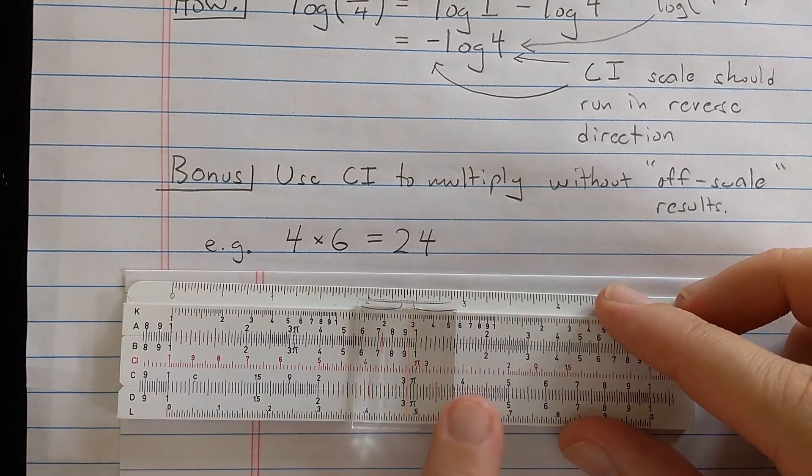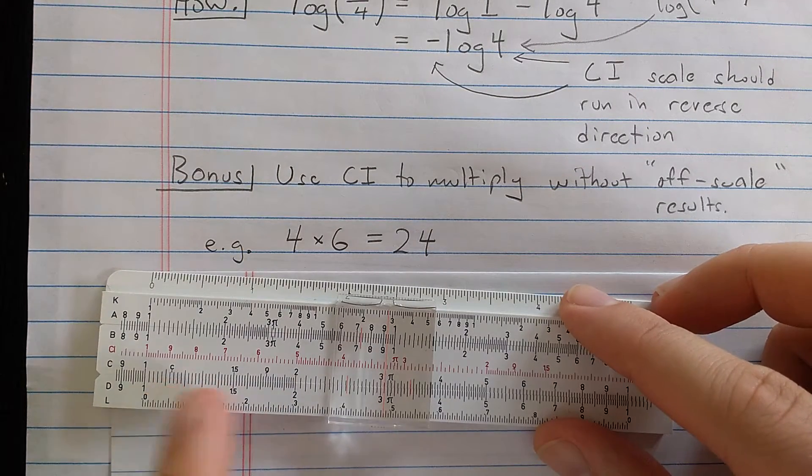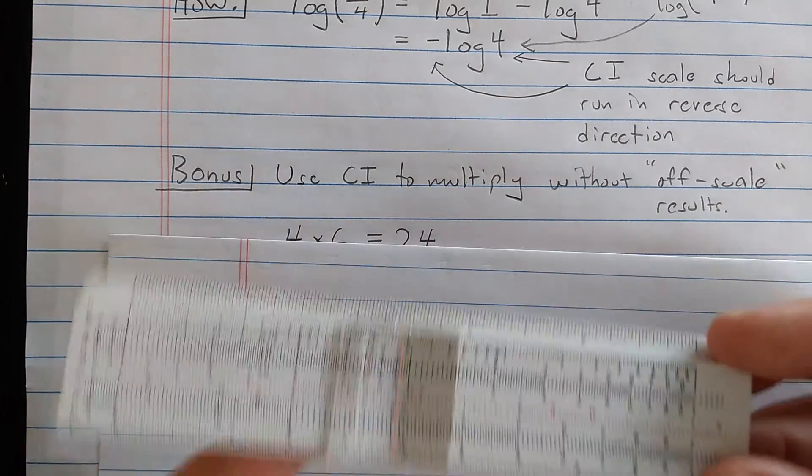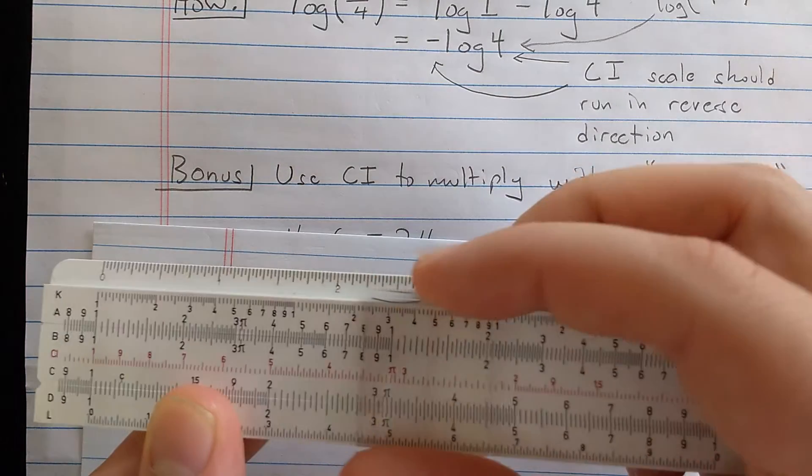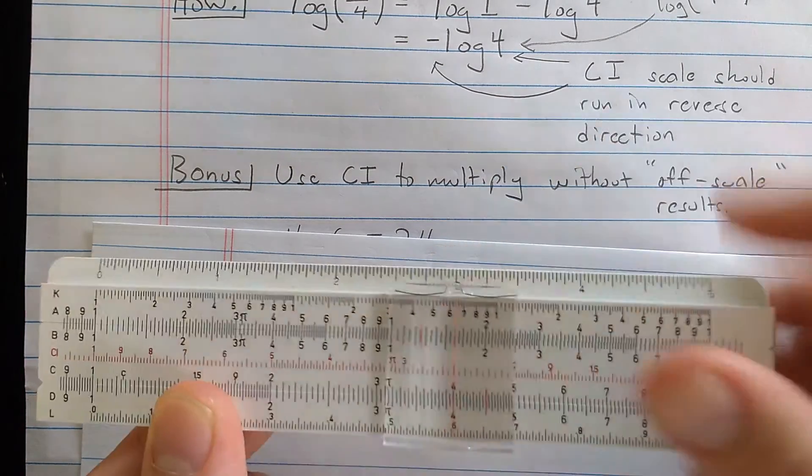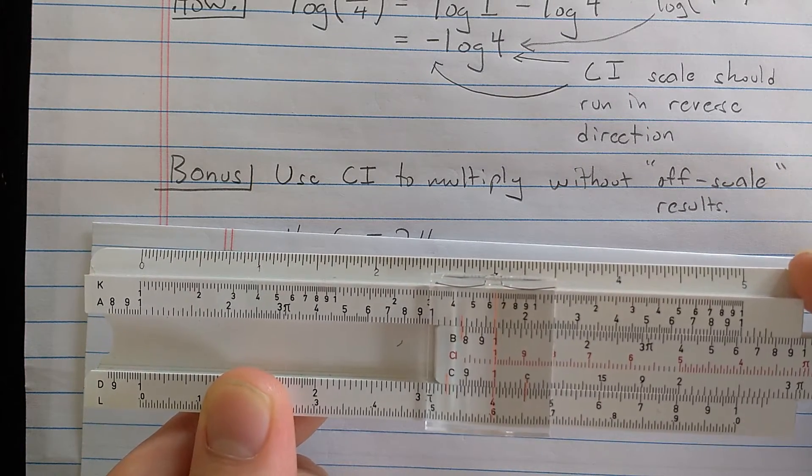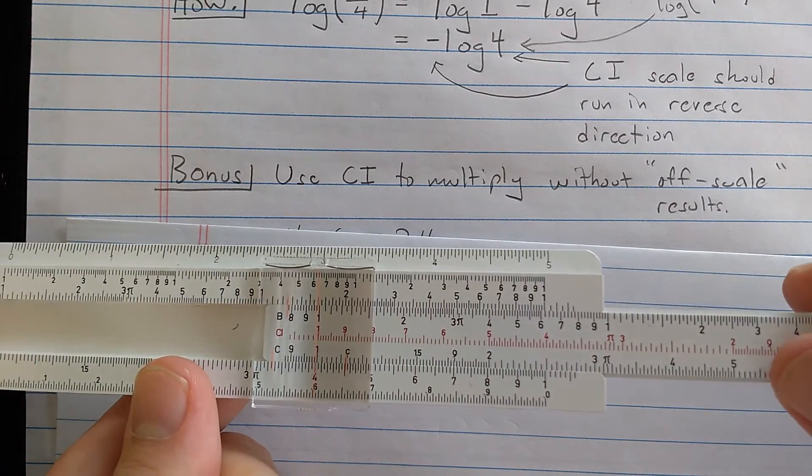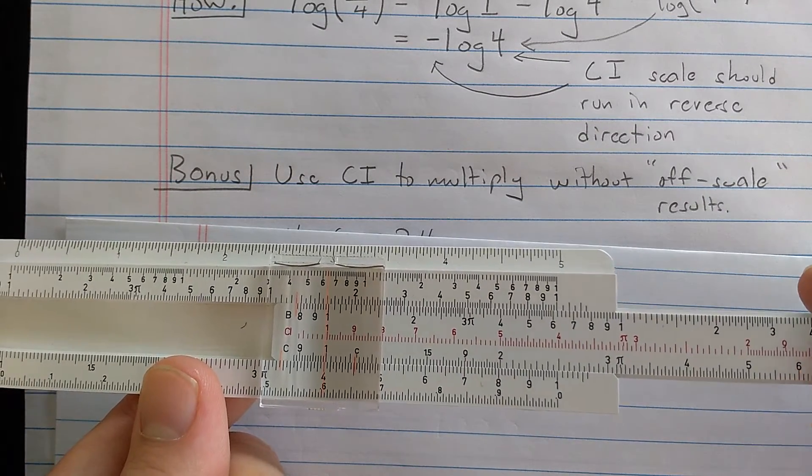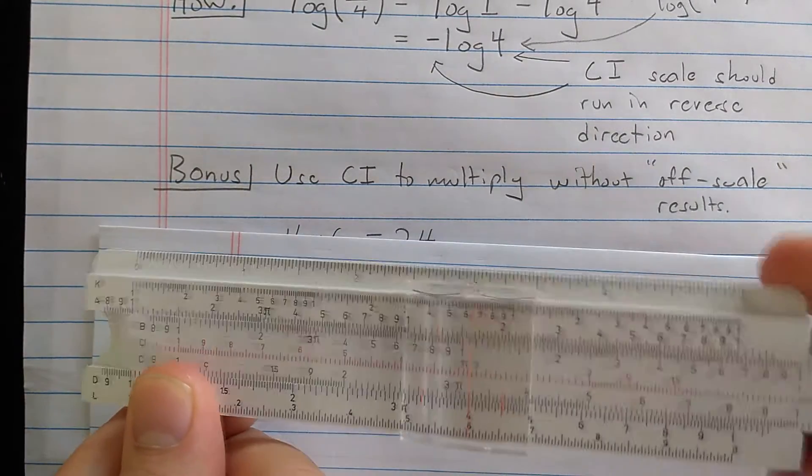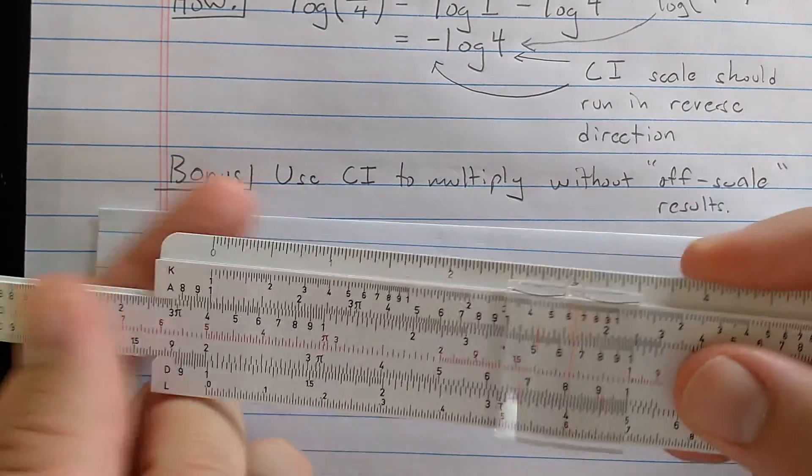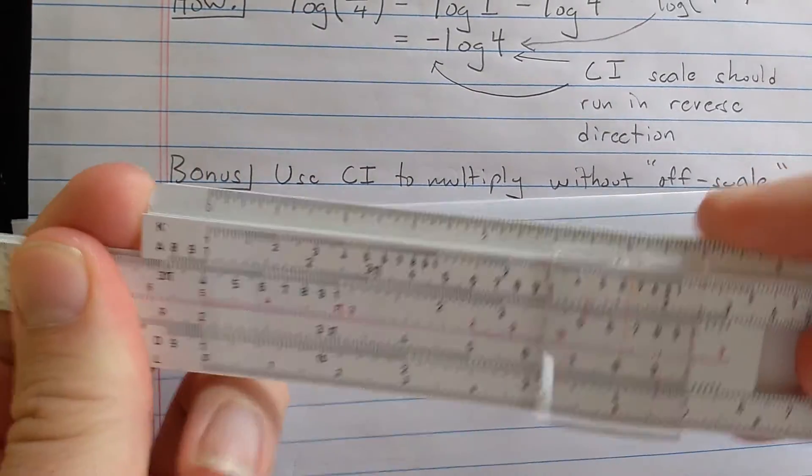So remember this problem from the first video where I took the distance from 1 to 4 on the D scale and I wanted to multiply. So I found the 4. Then I aligned the index. And then I wanted to come to 6 on the C scale. So it was way here off scale.